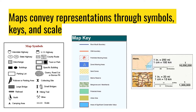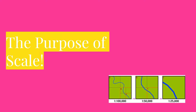On the left you see a number of different map symbols. In the center you see a representation of a map key, and on the right you see a representation of scale in a map. The purpose of scale — it can show you the difference by looking at ratio. One inch in the first map represents 100,000 units of measurement. In the second map, 1 equals 50,000 units, and in the third map, 1 equals 25,000 units. So scale is very important when looking at a map; it helps you determine the size of an area.